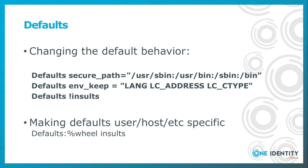sudo has a huge number of defaults and you can change those using the defaults statement in the sudoers file. Here there are a couple of examples on screen, like you can override which path is considered to be secure, which environment variables to keep from the user, or if you want to enable insults for your users. You can make these defaults user- and host-specific as well, like in this case where defaults are enabled only for members of the wheel group.